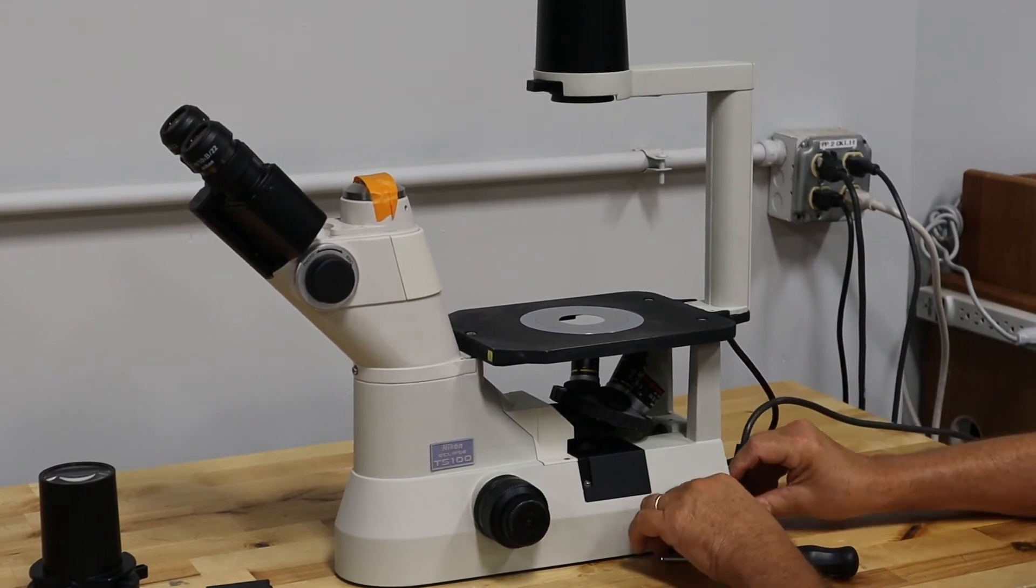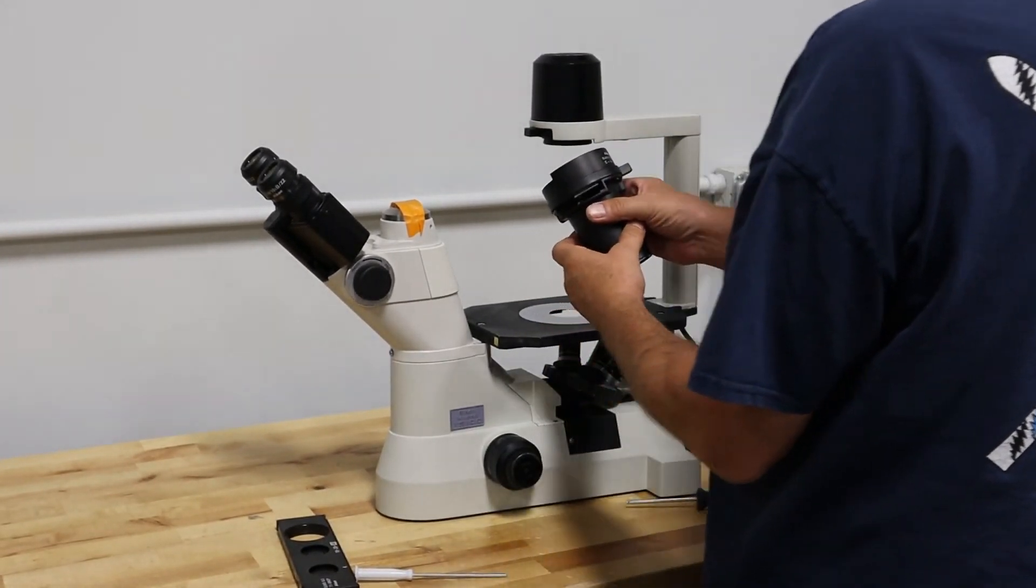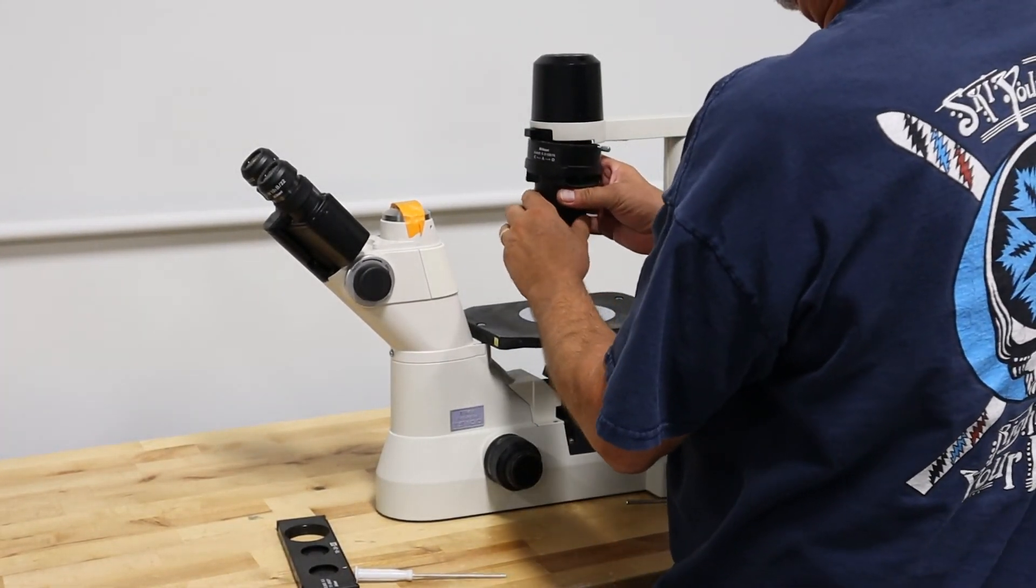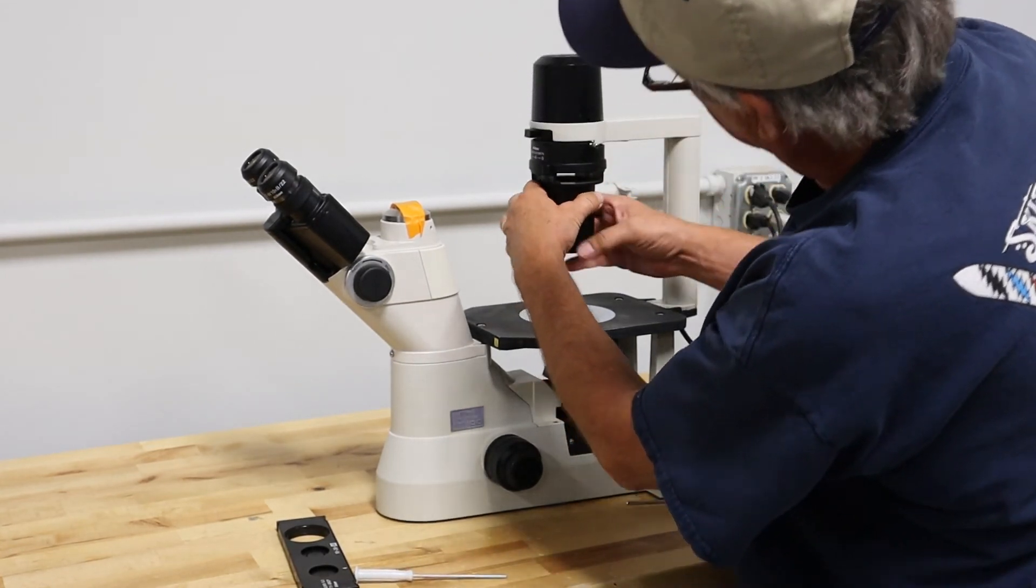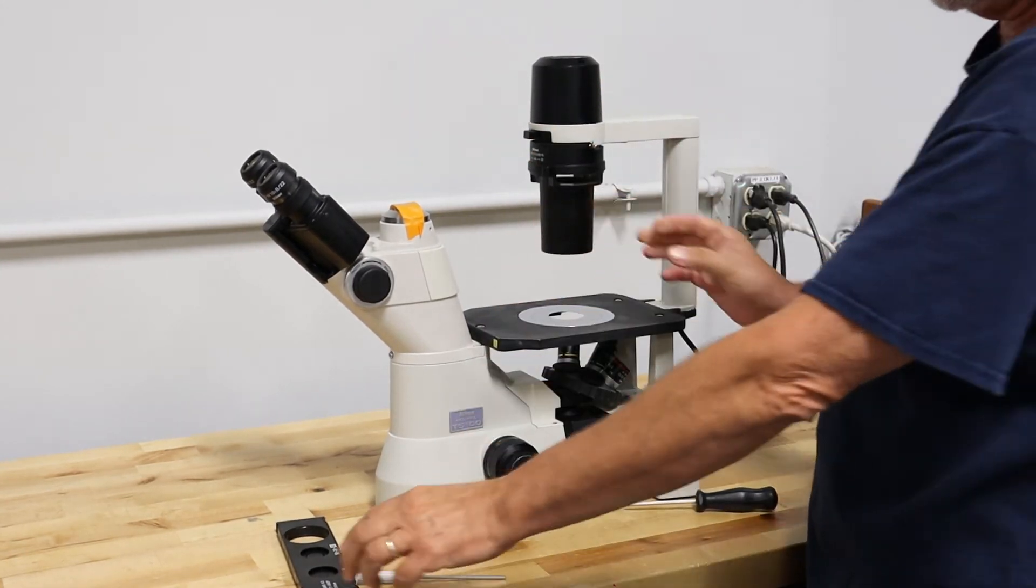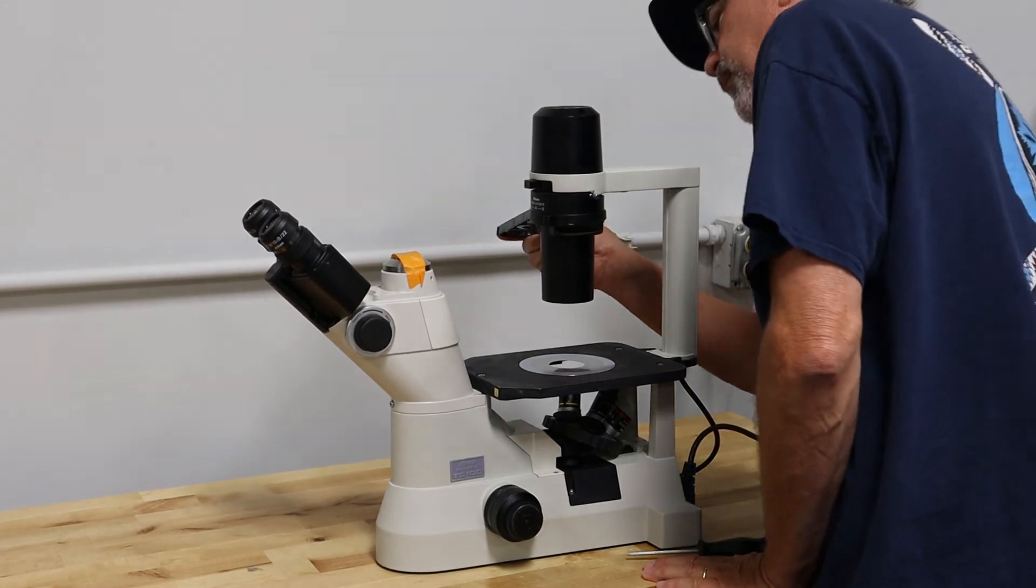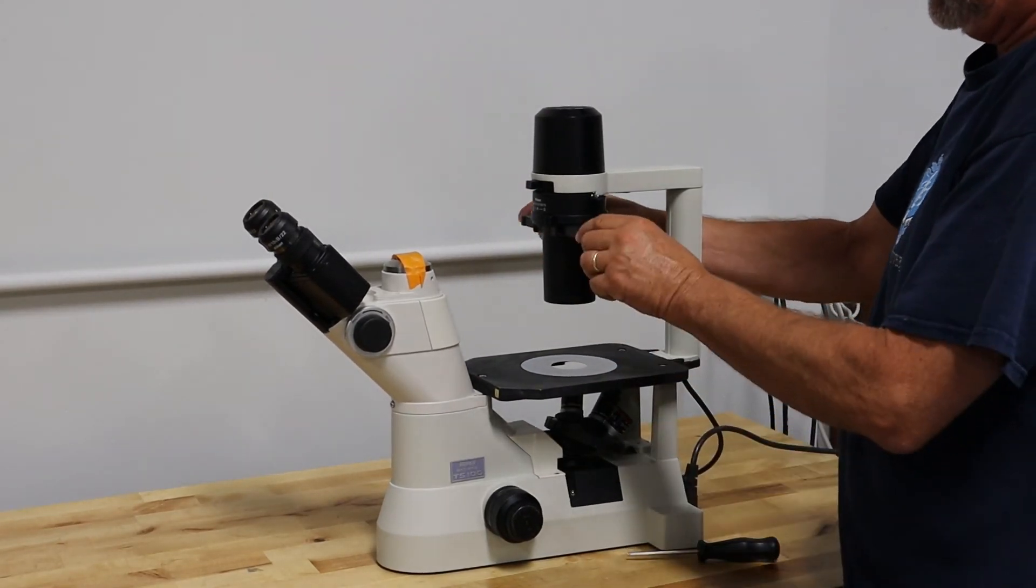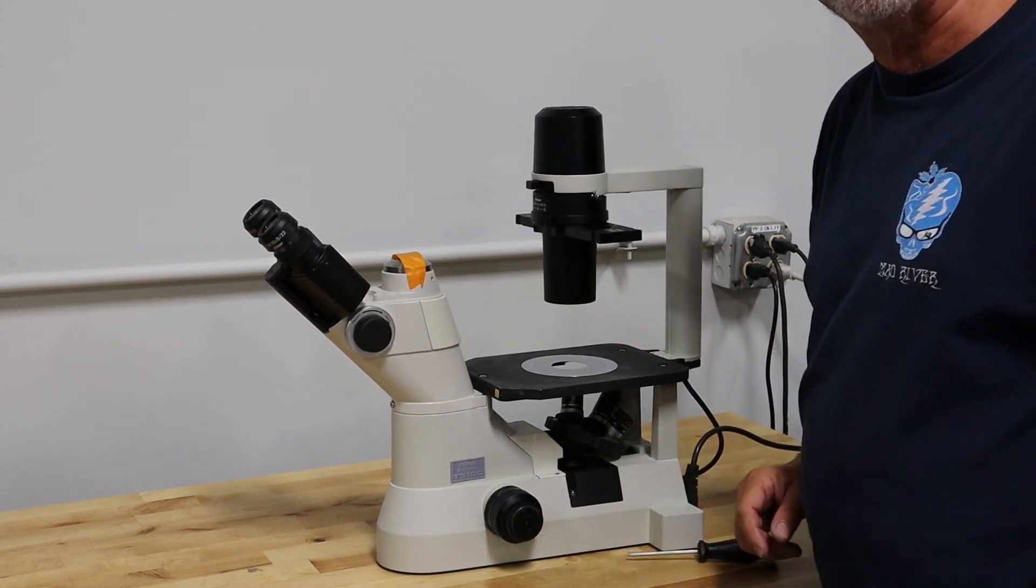Power cord. Condenser. Little thumb screw locks it in place. Phase rings. Bada bing. Ready to look at tissue cultures.